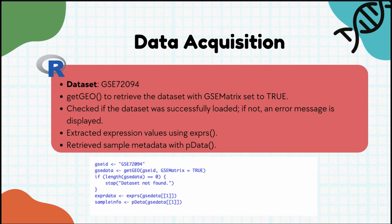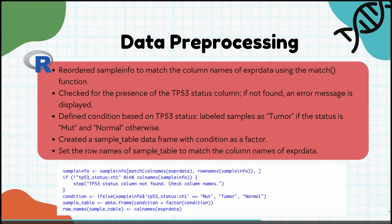Now that we have everything set up, let's move on to the exciting part: data acquisition. We'll be downloading dataset GSE72094 from GEO, which contains expression data from lung cancer patients. Once downloaded, we'll load it into R for analysis. The steps are: get the dataset using the GEOquery package, extract the expression data and sample information, then prepare the data for analysis by ensuring it's clean and formatted correctly.